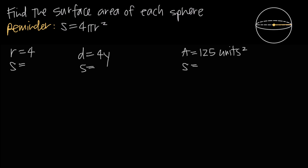In this video, we're talking about how to find the surface area of a sphere. The surface area is the area it takes to cover the entire surface of the sphere. We're always going to use the same formula: surface area is equal to 4 times pi times r squared, where r is the radius of the sphere.